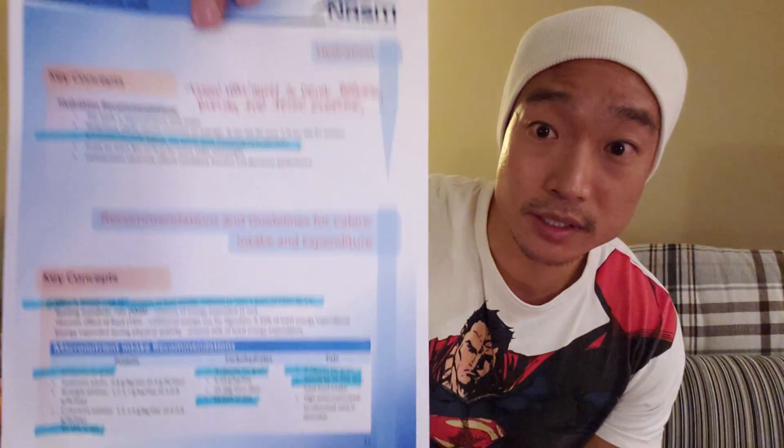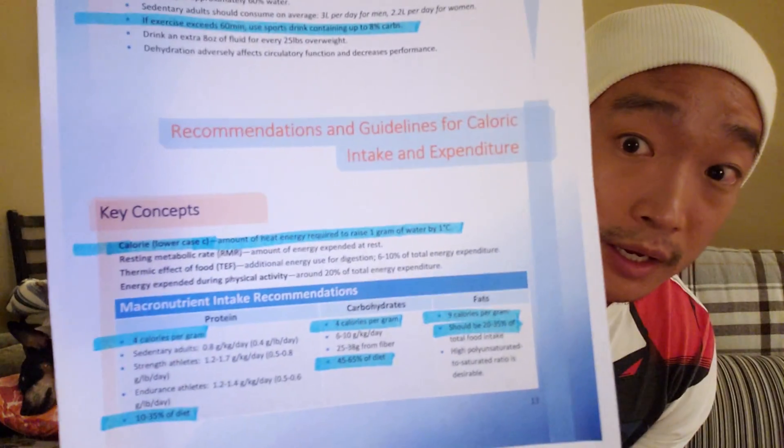Also on page thirteen, some key concepts: know the definition of a calorie, and how much you should intake in terms of protein, carbohydrates, and fats. There's a table in the book — protein is 4 calories per gram, carbs are 4 calories per gram, and fat is 9 calories per gram.